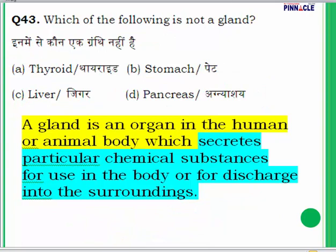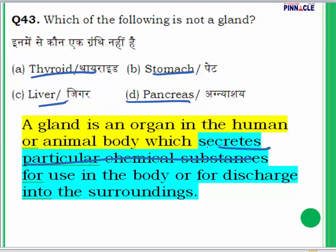Question 43: Which of the following is not a gland? The options are thyroid, stomach, liver, and pancreas. A gland is an organ in the human or animal body which secretes a particular chemical substance. Out of these options, only the stomach is not a gland. The answer to question 43 is B — stomach.